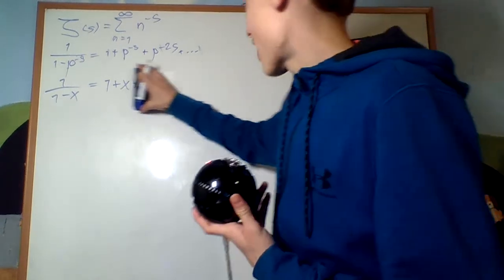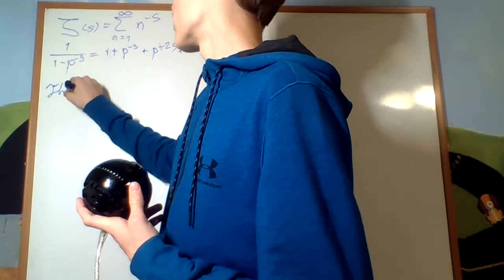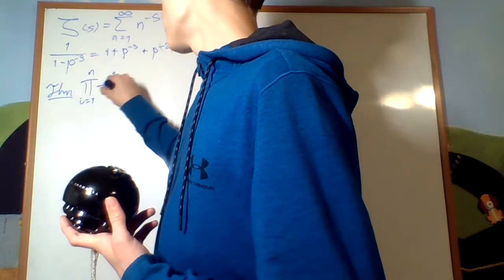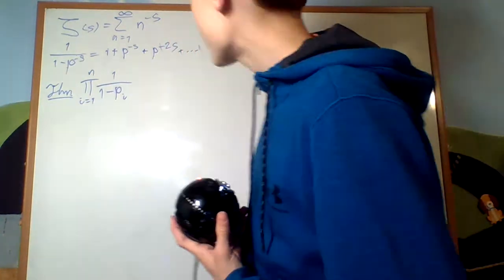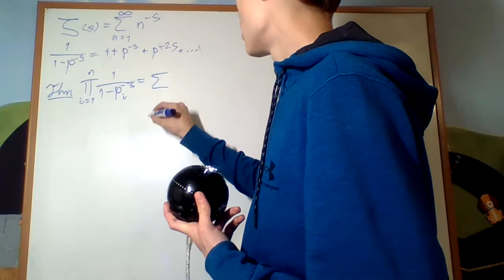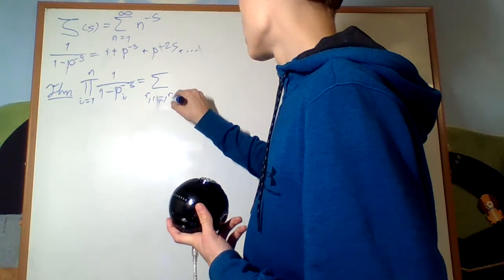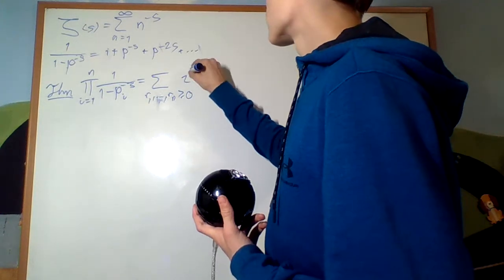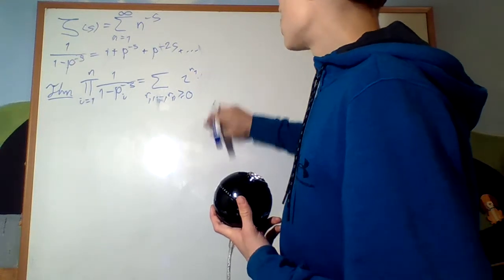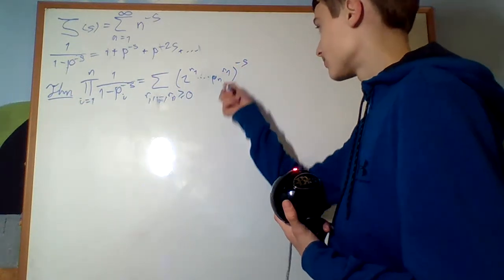Now, how can we use this fact? Let's think about the products of these for prime numbers. I have a very specific theorem: the product from i equals 1 to n of 1 over 1 minus p sub i — the i-th prime — to the negative s, is simply going to be the sum of all r1 to rn bigger than or equal to 0, of 2 to the r1 times 3 to the r2, all the way up until pn to the rn, all to the power of negative s.